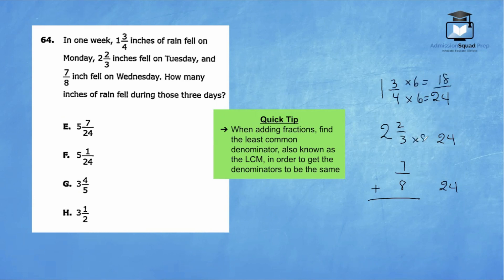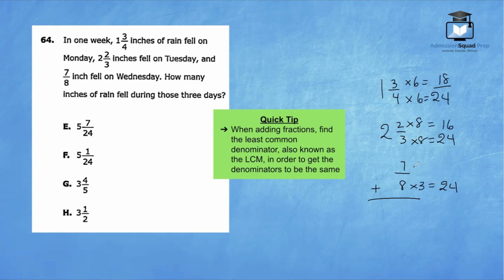Two times eight is 24, so we multiply the numerator times eight and get 16. Three times eight is 24, so we multiply the numerator by eight and get 16. And eight times three is 24, so we multiply the numerator by three and get 21.